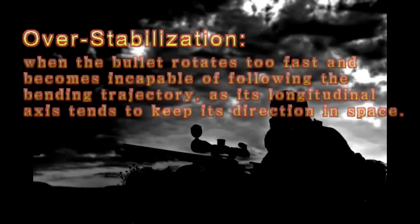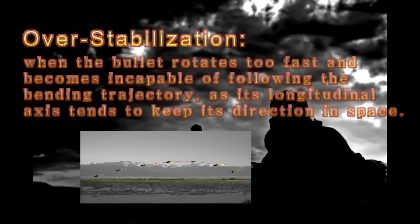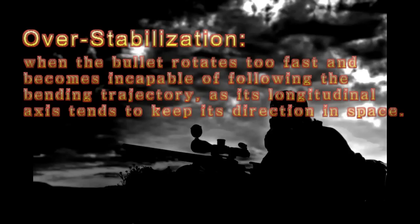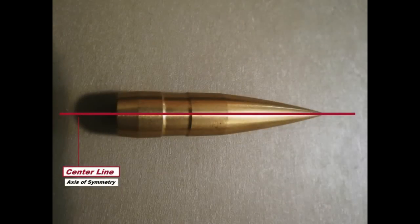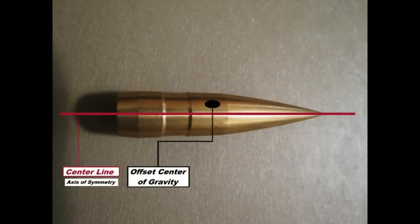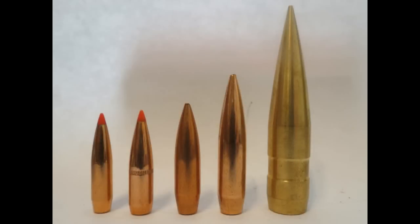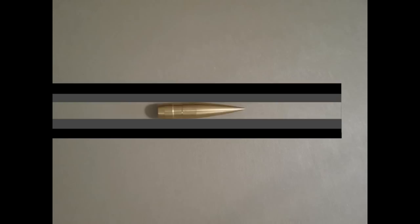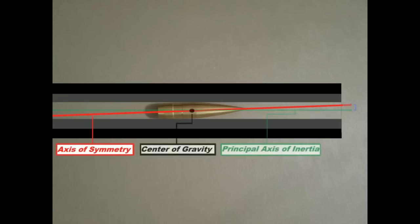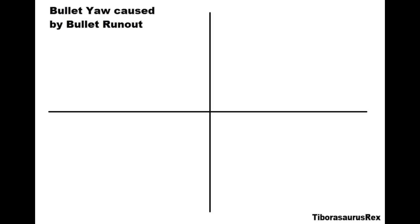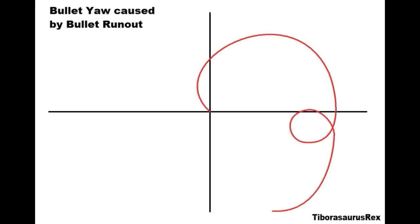Too much static stability can cause overstabilization, which may cause a loss in tractability later on. The reality is that any rifle bullet you select is going to have some degree of imperfection — you're never going to find a bullet that's perfectly stable statically speaking. As a result, you will have some degree of yaw caused by runout or by concentricities within the bullet structure — jacket thickness differences and things like that can throw off the balance of that bullet.